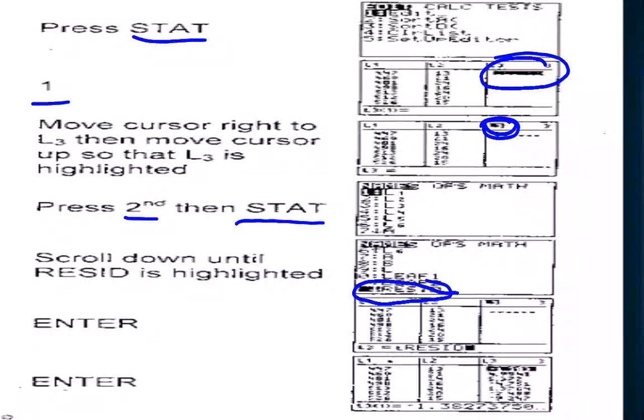And we do STAT 1. And that gets us over here to list 3. We need to move our cursor until the list 3 is actually highlighted. And then we press 2ND STAT. This will take me to my list function. And at the bottom of the screen, sometimes I have to scroll down, it's going to say RESID. And that's what I want to have highlighted. And I hit enter 2 times. And now in list 3, I'm going to have all of my residual values, and I can answer any sort of question I get about those.